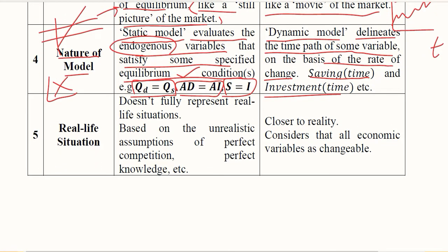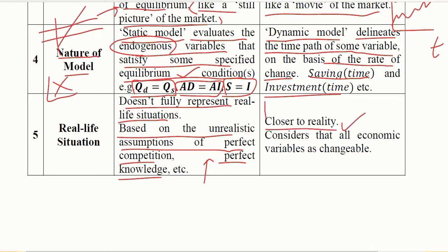The fifth ground is the real life situation. Static analysis does not fully represent real life circumstances, being based on unrealistic assumptions such as perfect competition and perfect knowledge. Therefore it lacks this feature. Whereas dynamic analysis is relatively closer to reality because in real life, time continues to go ahead, making it suitable to analyze models by considering changes in economic variables over time.